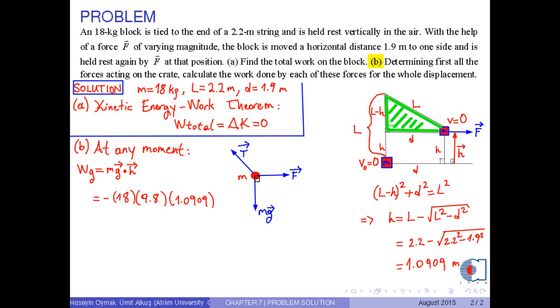Here, if we use the Pythagorean theorem in the figure, we can find h. Then we get the work done by the gravitational force as negative 152.43 joules, or in three significant figures, it is approximately negative 152 joules.